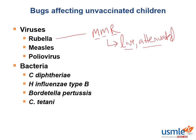Measles and mumps are part of the paramyxovirus family. Now, talking about measles for a quick second, do you remember the prodrome — the preceding symptoms seen in measles infections? Remember, it's those four C's: you see cough, coryza, conjunctivitis, and Koplik spots.